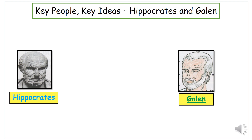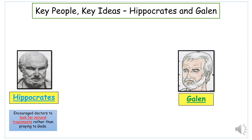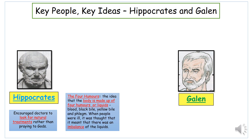Here are two people mentioned in the BBC Teach video: Hippocrates and Galen. These gentlemen were alive long before medieval times, but their ideas continued to influence what people believed and did for a long time after their deaths. Hippocrates is important because he broke the mould — he wasn't looking at gods or superstition to explain illness. Instead, he looked to nature for reasons why people were sick and for treatments. This led to the really big idea of the four humours — the idea that the body is made up of four liquids.